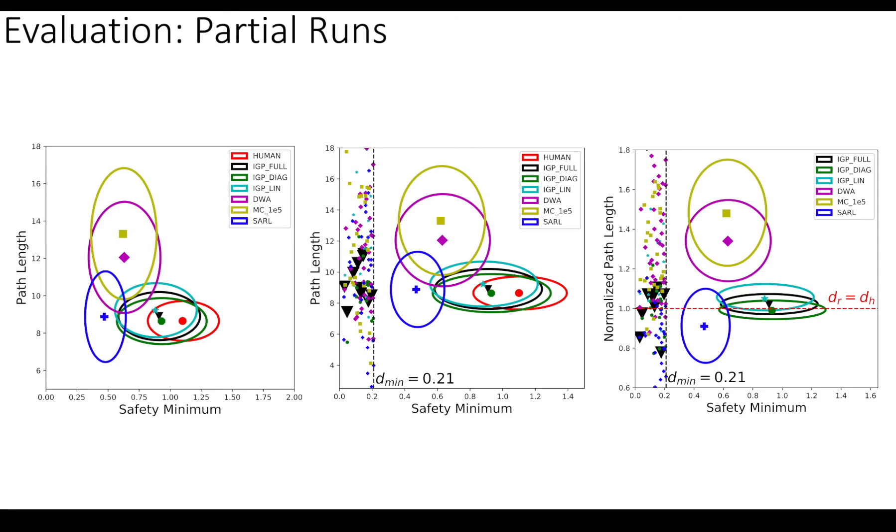And if we do that, we see that the IGP variants cluster around the DR equal to DH line. So they're pretty close in numbers, whereas the reinforcement learning algorithm is quite a bit lower. So it's much more aggressive. And again, as you can see, we get quite a few more collisions. And conversely, the heuristic-based methods are quite a bit higher than DR equal to DH.